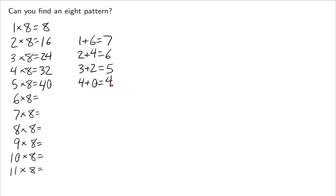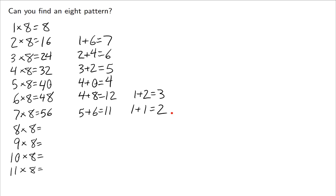The next one you might expect 3. 6 times 8 is 48, and 4 plus 8 is 12 — but wait, 1 plus 2 is equal to 3. So it does work. For 7 times 8 we get 56; add them up and you end up with 2 after two steps.